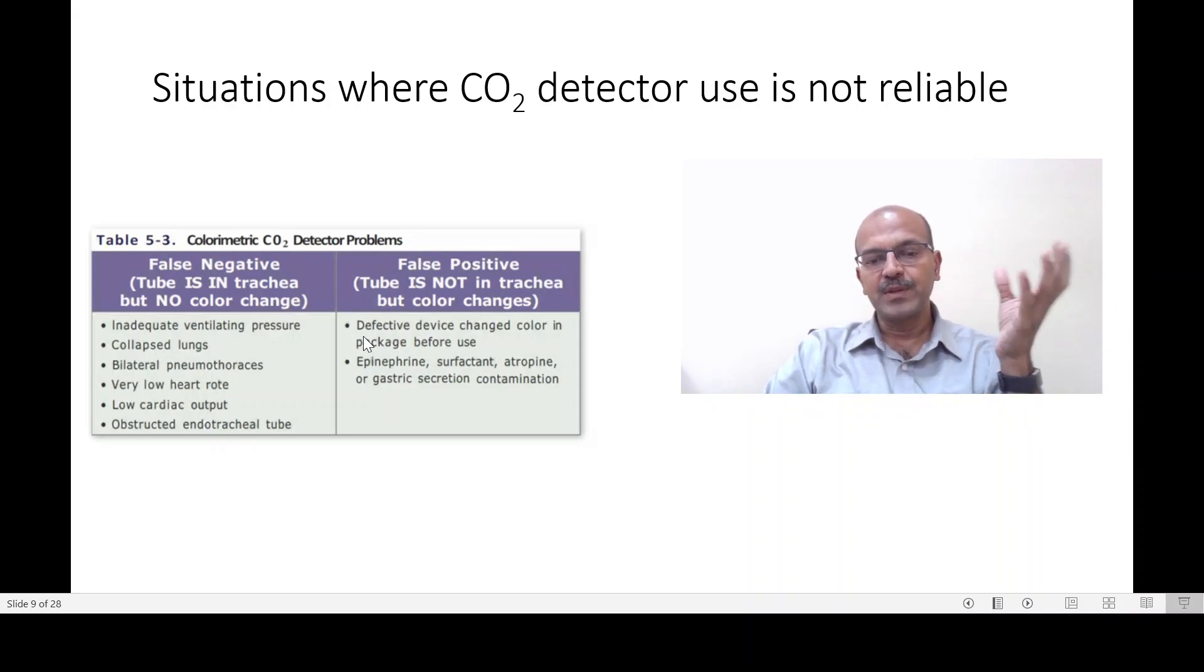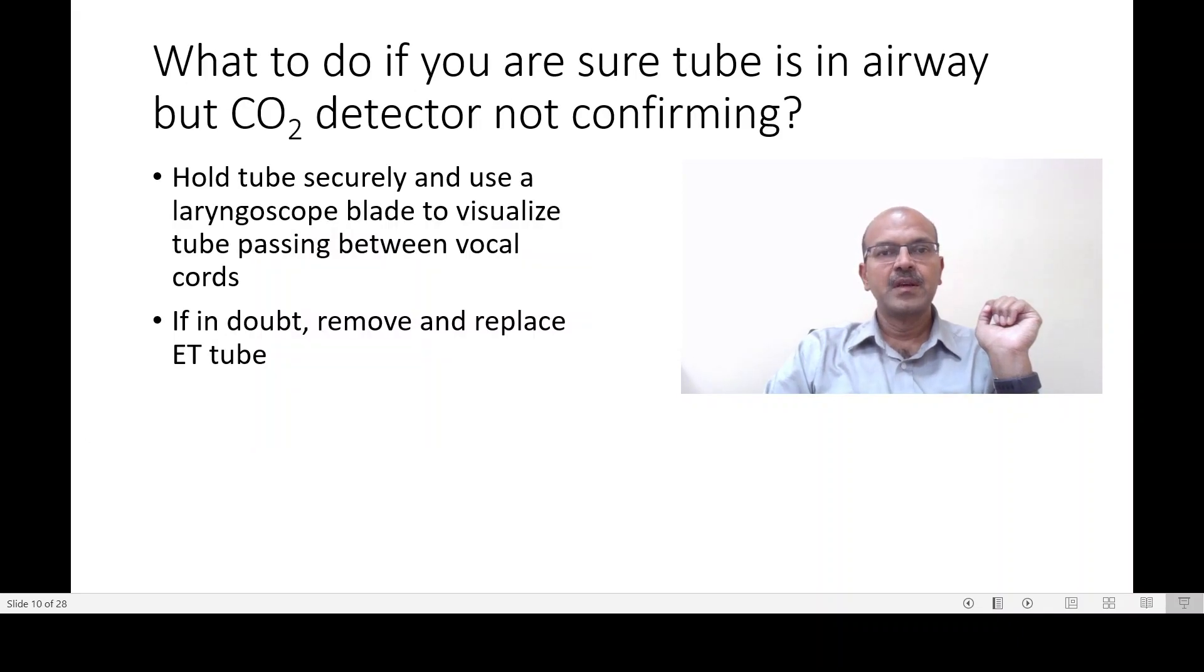It is always handy to keep it with you even if you remove it for the dead space reason, because if you are in doubt, you can quickly connect it and check its level. What to do if you are sure that the tube is in the airway, like you are an experienced intubator, but repeatedly the CO2 detector is not confirming? Then you can hold the tube securely and use a laryngoscope blade to visualize if the tube is passing between the vocal cords. This is not easy. You need to be really careful so the tube doesn't slip out when you are putting the laryngoscope in.